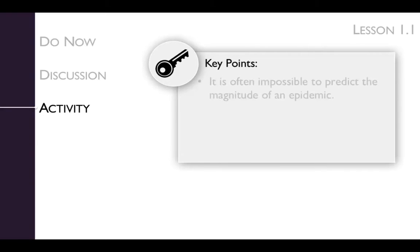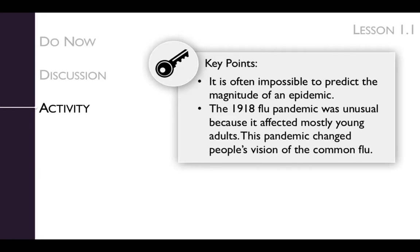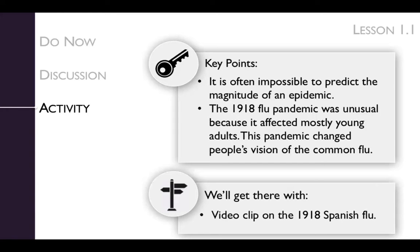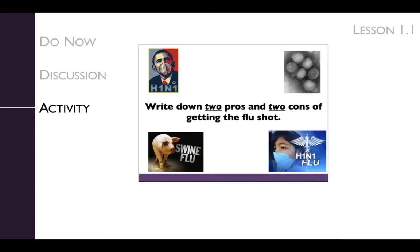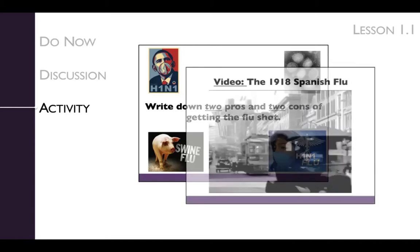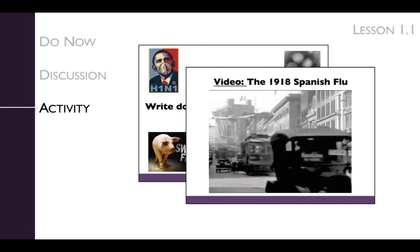The key points of the lesson's activity are that it is often impossible to predict the magnitude of an epidemic. The 1918 flu pandemic was unusual because it affected mostly young adults, and this pandemic changed people's vision of the common flu. We'll get there with a video clip on the 1918 Spanish flu. Before watching the video, ask your students to write down two pros and cons of getting the flu shot. We will return to these thoughts after watching the video. Once everyone has recorded their thoughts, play the eight-minute video.